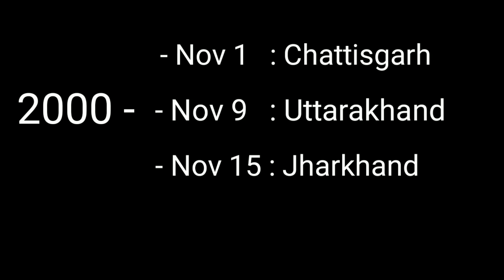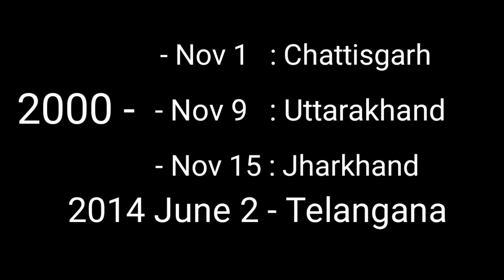In 2000, three states were formed: on November 1st, Chhattisgarh; on November 9th, Uttarakhand; and on November 15th, Jharkhand.